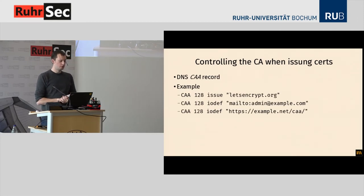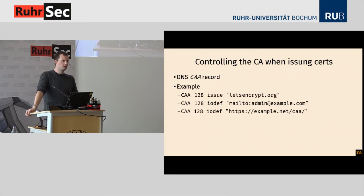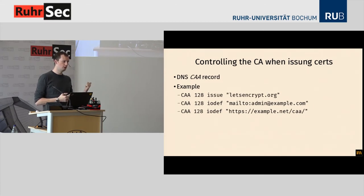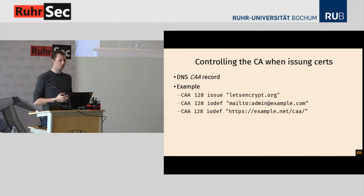First, there is a thing called DNS CAA records — Certificate Authorization. The idea is that a DNS record in your domain tells which CAs are supposed to issue certificates for your domain. The format is relatively simple: the first number is a bitmask — if the seventh bit is set, it means enforce this. There are commands like 'issue' or 'issuewild' for wildcards, specifying which CAs may create certificates, and you can set up reporting via the 'iodef' command. If a CA tries to create a certificate, they look into the DNS records and if they see they are not allowed according to the CAA records, they stop and report.